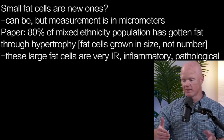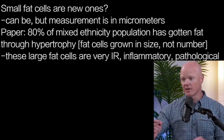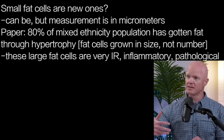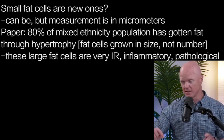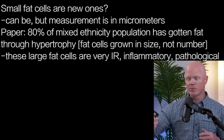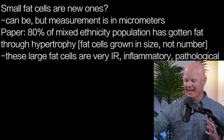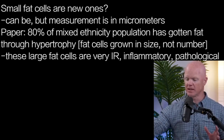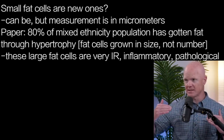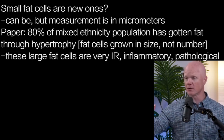With these two ideas combined, one can appreciate pretty quickly how insulin really does control the growth and the shrinking of the fat cell. A paper published decades ago found that in the average obese population, about 80-some percent of this mixed ethnicity population has gotten obese through hypertrophy — the number of fat cells hasn't changed, but the size of the fat cells has. That hypertrophy of the fat cell is particularly pathogenic: when a fat cell gets big or fat, it becomes very insulin resistant and very pro-inflammatory.